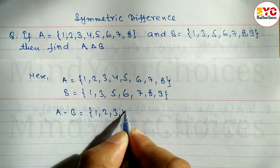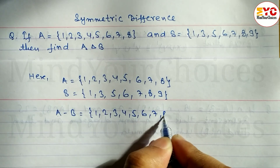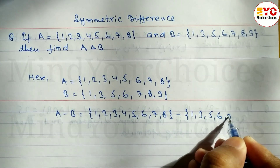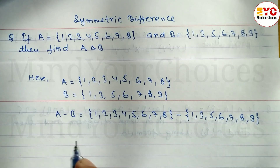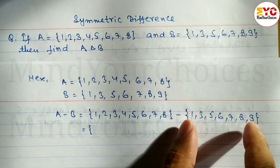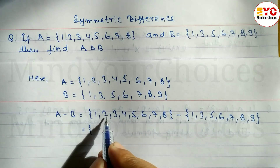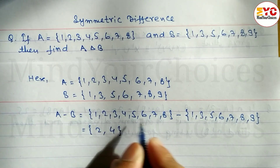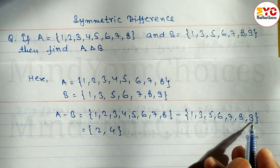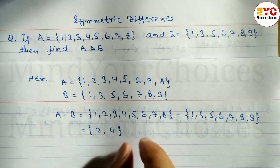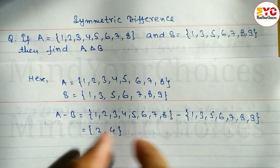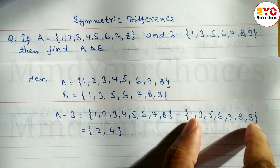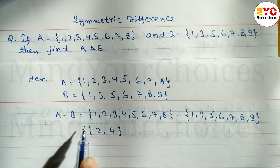Set A = {1, 2, 3, 4, 5, 6, 7, 8} minus set B = {1, 3, 5, 6, 7, 8, 9}. Let's find out the difference between A and B — we have to subtract set B from set A. Now: 1 and 1 cancel. 2 is not in B, so we write 2. 3 cancels. 4 is not in B, so we write 4. 5 cancels, 6 cancels, 7 cancels, 8 cancels. 9 is in B but not in A — however, since we are subtracting set B, we only write elements remaining in set A. So A minus B = {2, 4}.